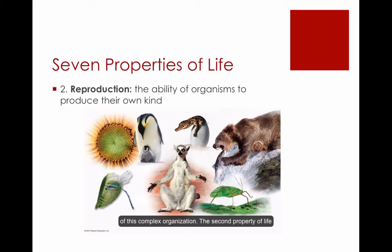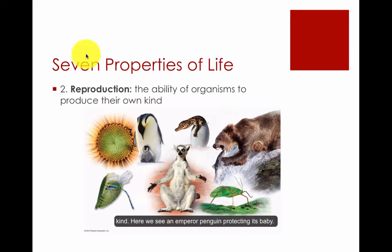The second property of life is called reproduction. This is the ability of organisms to produce their own kind. Here we see an emperor penguin protecting its baby.